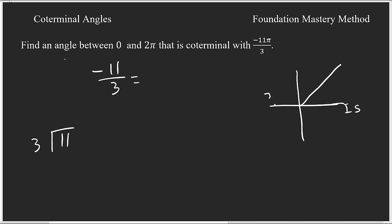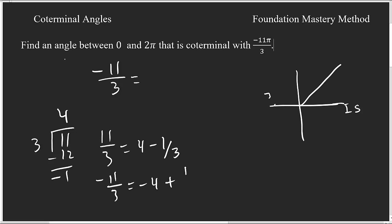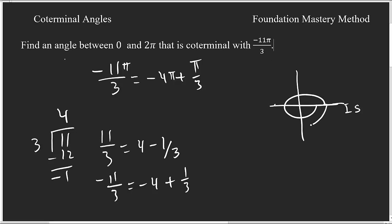Another way to see this: for the negative 11/3, go 4 times — 4×3 = 12, subtract 11 to get remainder 1. So 11/3 = 4 − 1/3, and negative 11π/3 = −4π + π/3. Since 4π is two complete rotations (two times 2π), we can skip those, leaving just π/3. This confirms our coterminal angle is π/3 — the easy way to figure it out.